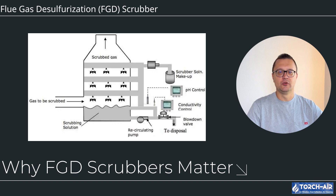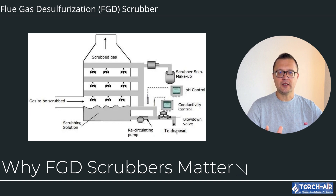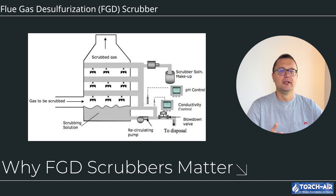Why FGD scrubbers matter. Before we get into the details, let's talk about why FGD scrubbers are so important. Sulfur dioxide is a major contributor to air pollution, specifically acid rain, which can harm ecosystems, agriculture, and even structures. Industrial processes like burning fossil fuels in power plants release large amounts of SO2. Governments worldwide have strict emissions regulations, and FGD scrubbers are a powerful solution to capture and neutralize this harmful gas before it escapes into the atmosphere.